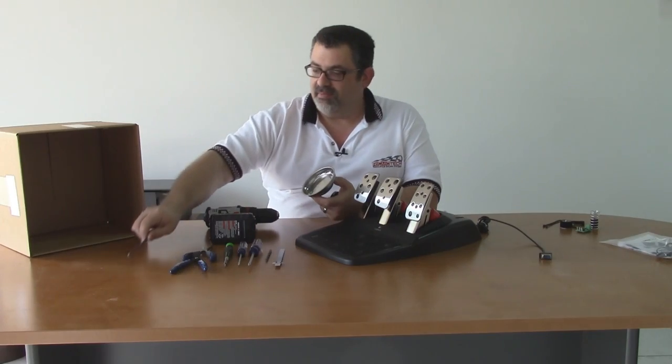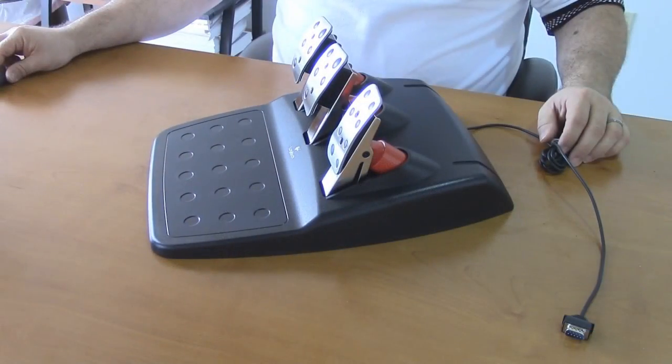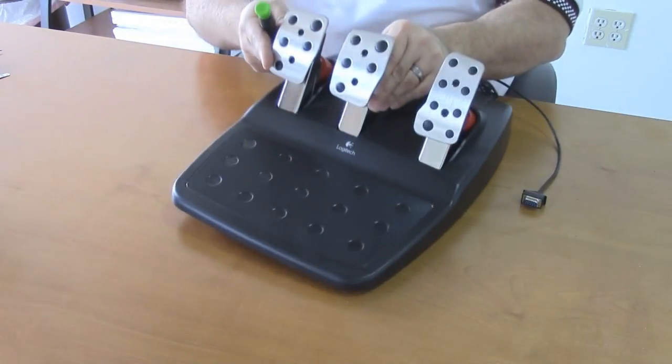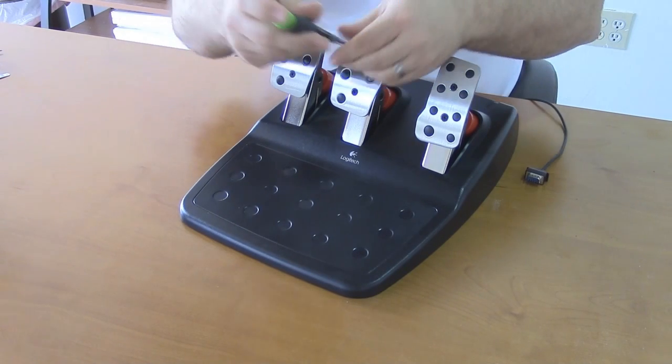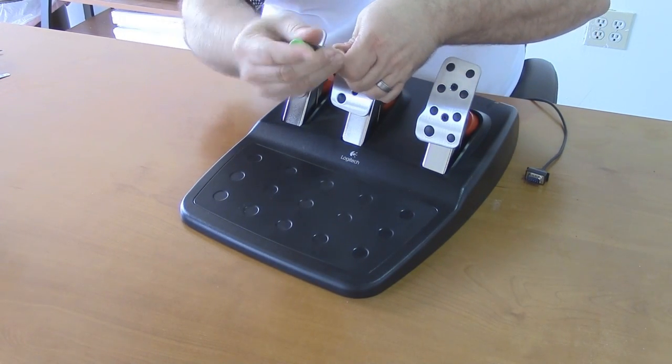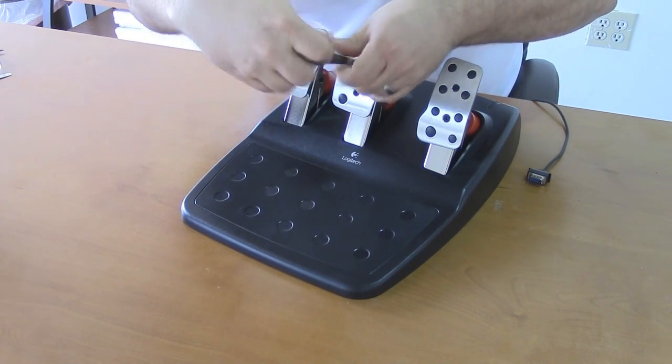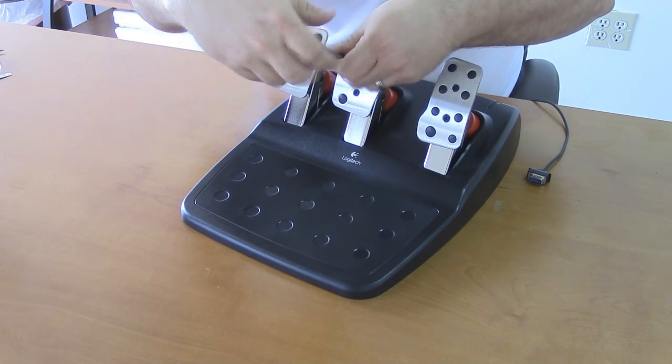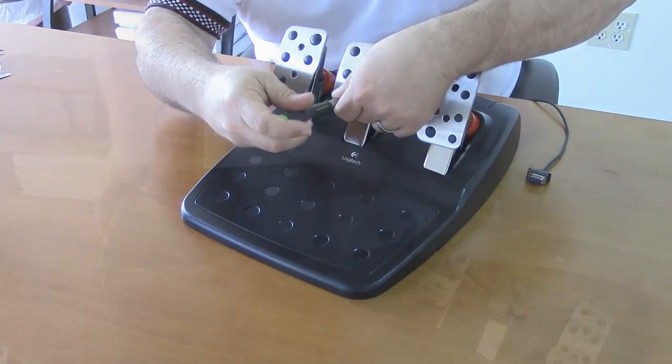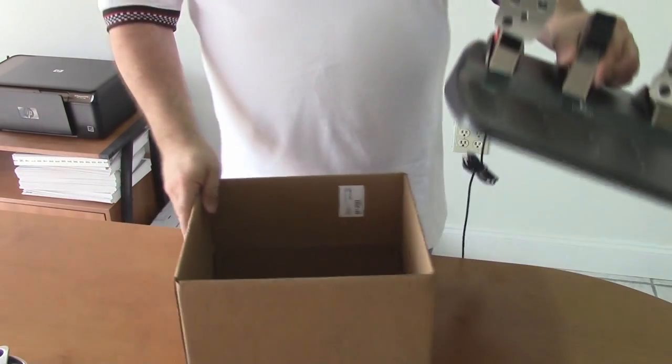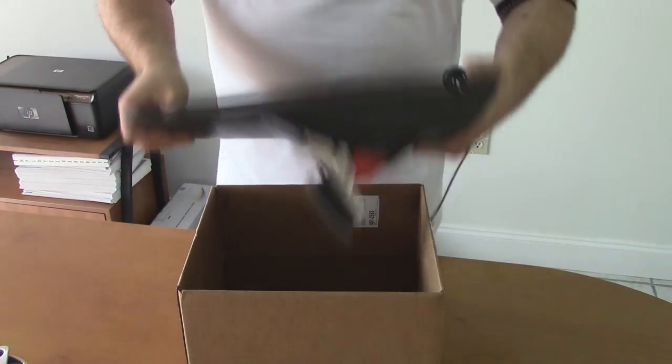First step we're going to do is remove the pedal face off the brake pedal. We only need to do the brake pedal because that's the only one that we're going to modify at this point. Now we've got the pedal face off, we're going to bring in the box and turn the pedals upside down into the box.